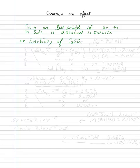We're still going to increase by X because for every one calcium sulfate that dissolves, we will make one calcium and one sulfate. Just like we did in the other Rice diagrams. At equilibrium, we'll have X and 0.500 plus X.